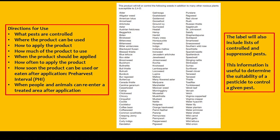Labels contain directions for use — remember, the label is the law. It includes what pests are controlled, where the product can be used, how to apply and how much to apply, when the product should be applied, how often to apply the product, and how soon the product can be used or eaten after application — that's the pre-harvest interval — and also when people and animals can re-enter a treated area after application.